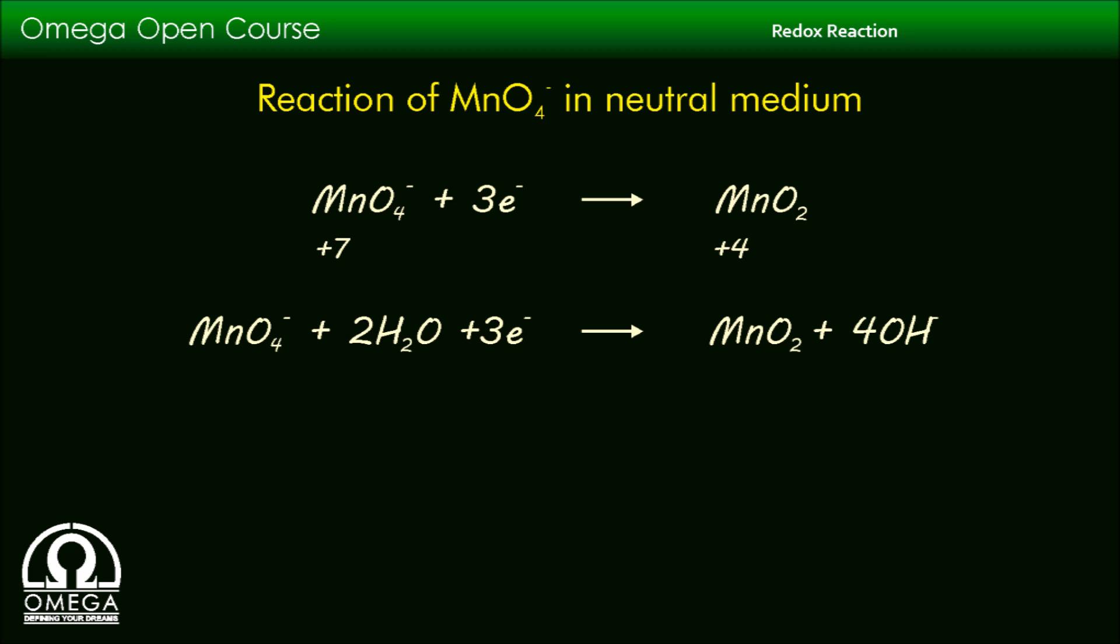Now in order to balance the oxygen atom, we add 2 H2O molecules on the reactant side and 4 OH minus ions on the product side. Our reaction half is balanced now.